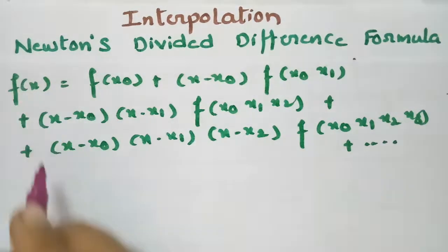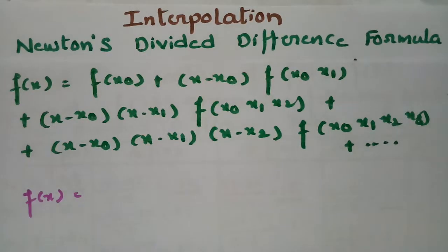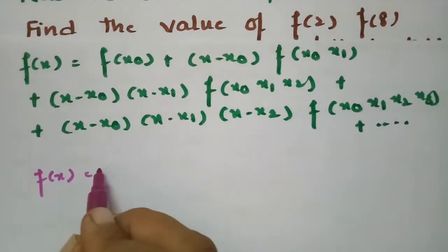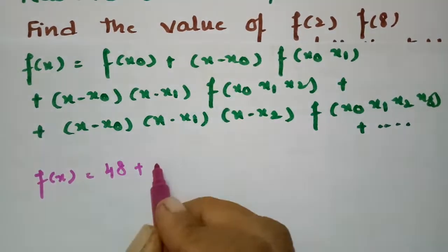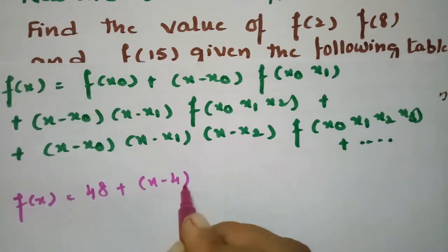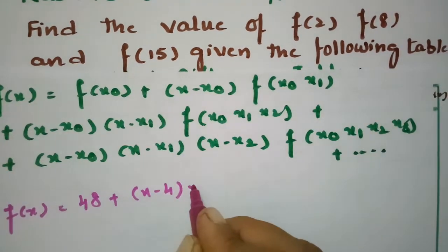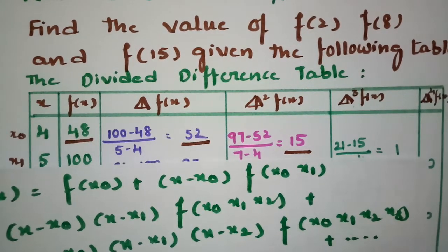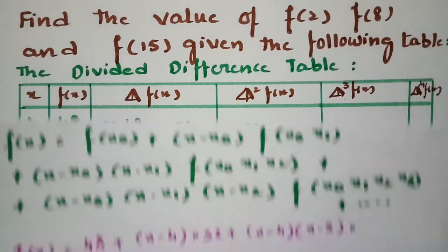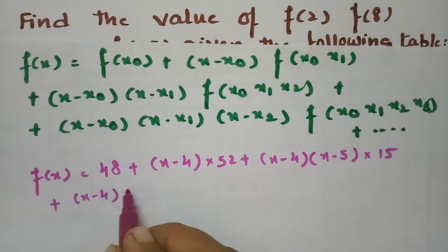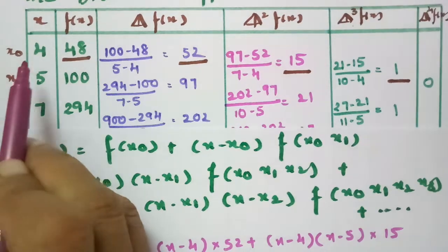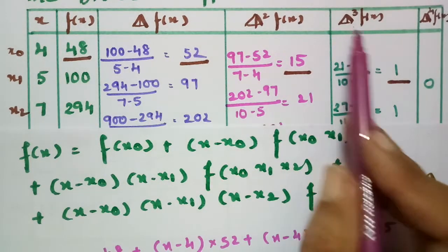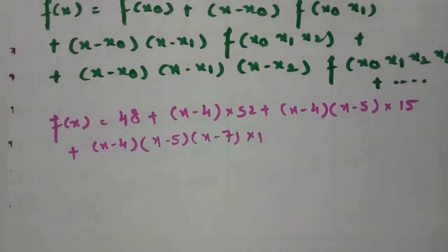Substituting the values: f(x) = 48 + (x − 4)·52 + (x − 4)(x − 5)·15 + (x − 4)(x − 5)(x − 7)·1. Here x₀ = 4, f(x₀) = 48, first divided difference is 52, second is 15, and third is 1.